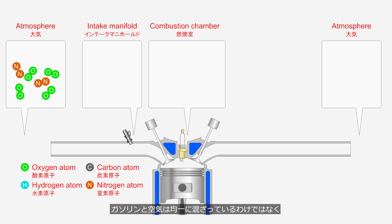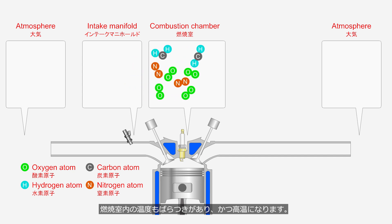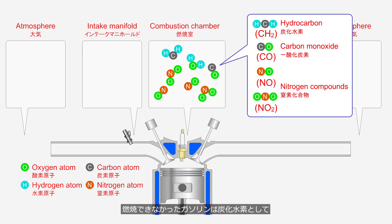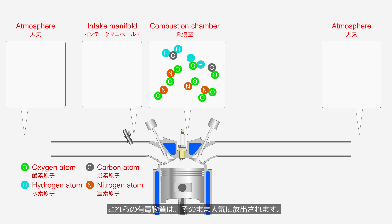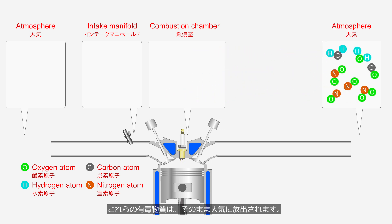The gasoline and air are not uniformly mixed, and the temperature in the combustion chamber varies and becomes high. Unburned gasoline is emitted as hydrocarbons. Carbon from incomplete combustion is emitted as carbon monoxide. And nitrogen oxidized at high temperatures is emitted as nitrogen compounds. These toxic substances are released directly into the atmosphere.